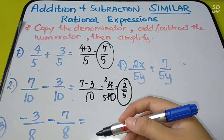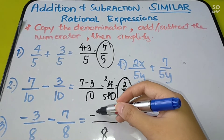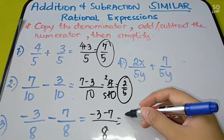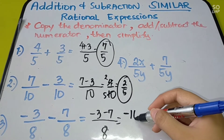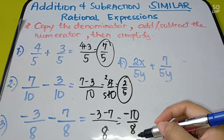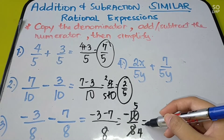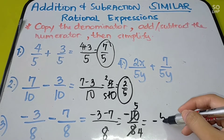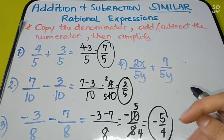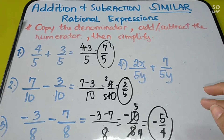The final answer must always be simplified into lowest terms. Next, we have negative 3 over 8 minus 7 over 8. Copy the denominator 8, then we have negative 3 minus 7. Since they have the same sign, you are going to add. Negative 3 plus 7 is 10, so that is negative 10 over 8. Since 10 and 8 are divisible by 2, simplify: 10 becomes 5 and 8 becomes 4. The final answer is negative 5 over 4.